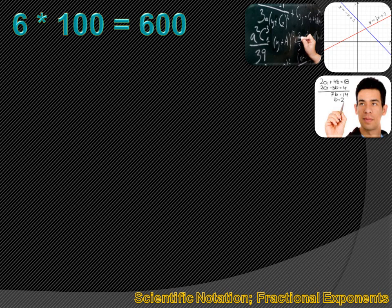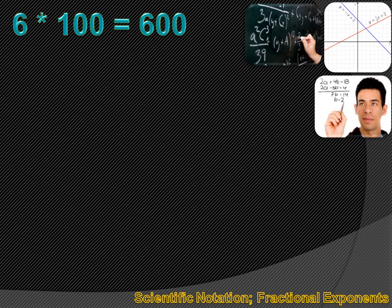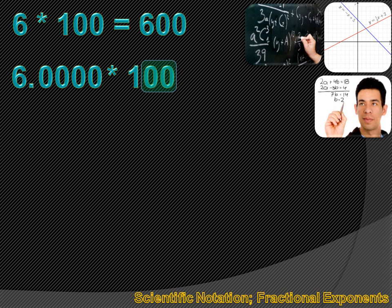When we multiply or divide by multiples of 10, we're just adding zeros to the number or subtracting zeros from it. Another way to say that is we're moving the decimal point to the right or to the left. For example, 6 times 100: there are two zeros in 100, so we add those two zeros and get 600. We can also say 6.0000 times 100 — moving the decimal point two places to the right gives us 600.